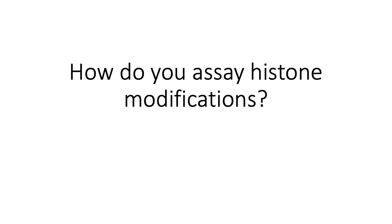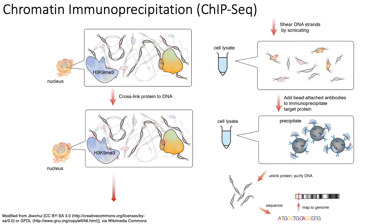We'll now briefly discuss assays used to identify the locations of histone modifications across the genome. Historically, one of the most popular assays is ChIP-seq. Antibodies have been developed for different histone modifications on different histone proteins, so we can use the standard ChIP-seq protocol to identify fragments of the genome that are close to histones with particular modifications on them.